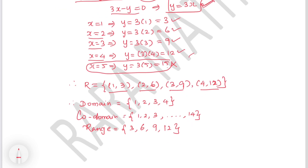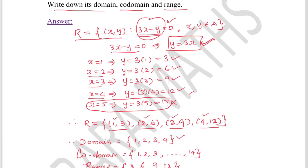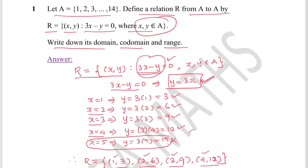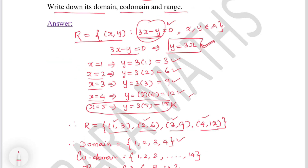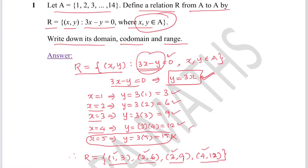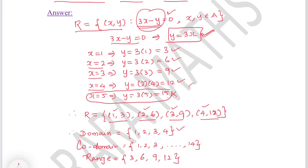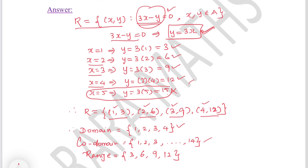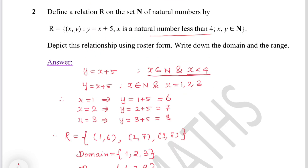The domain is the set of all first elements of the ordered pairs: {1, 2, 3, 4}. The co-domain is the entire set A, since R is defined from A to A. The range is the set of second elements of the ordered pairs: {3, 6, 9, 12}.